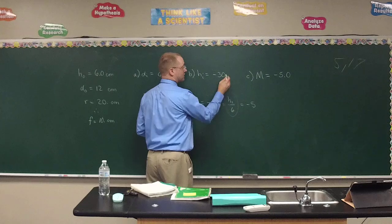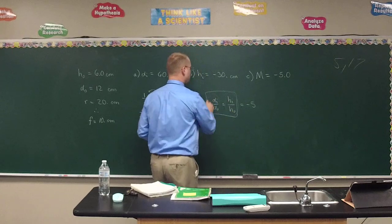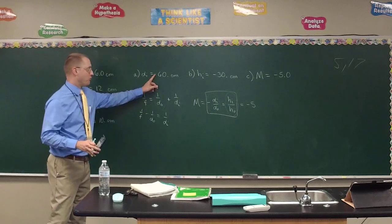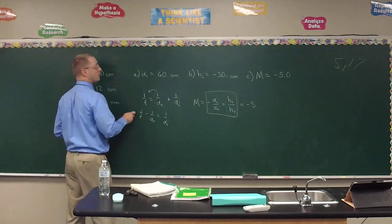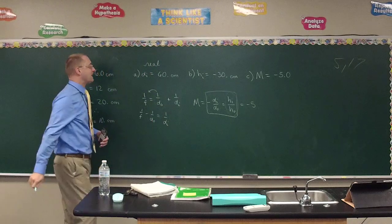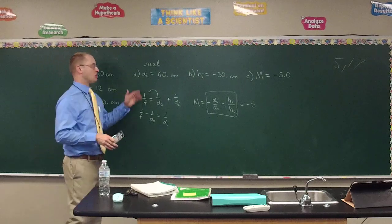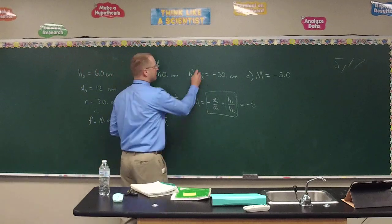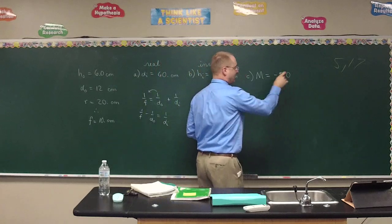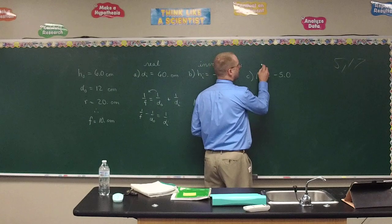Notice d_i is positive. What does positive d_i always mean? Real. Positive d_i always means real, in the location you would expect. Negative means the opposite spot. So it's a real image. What does negative height indicate? It's inverted. And if we look at the absolute value of lateral magnification, it is greater than 1, so therefore it is enlarged.